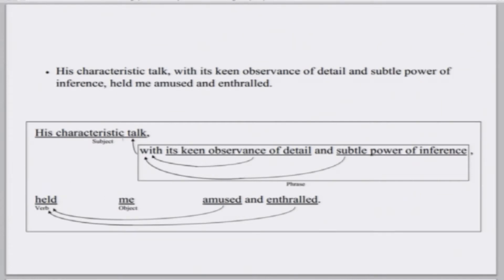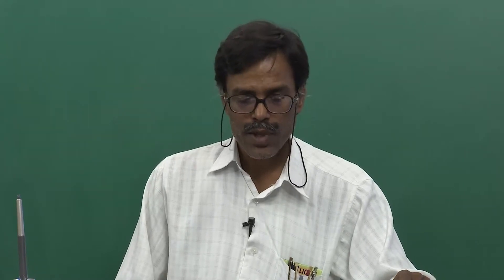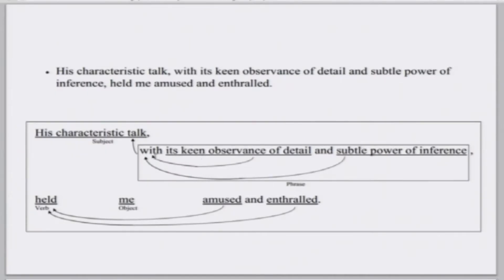Apart from that, the phrase 'with its keen observation of detail and subtle power of inference' is operating like an adjective to the word 'talk'. Another adjective to the same word 'talk' is 'characteristic'. So this entire phrase is qualifying 'talk'. The subject from here to here is the main subject word 'talk'. You can take the sentence as 'talk held me' — subject, verb, object. What kind of talk? Characteristic talk, whose? His. With several properties. This turns out to be a simple sentence.